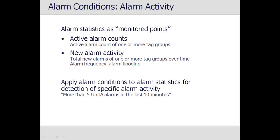In addition to monitoring points from the underlying data source, Top View allows you to recognize specific alarm activity within Top View. For example, you can monitor tag groups for the active alarm count, or the number of alarms that occurred over the last five minutes. These alarm statistics points can be monitored just like any other points, allowing you to detect and send notification for specific alarm behavior within Top View, such as alarm flooding.